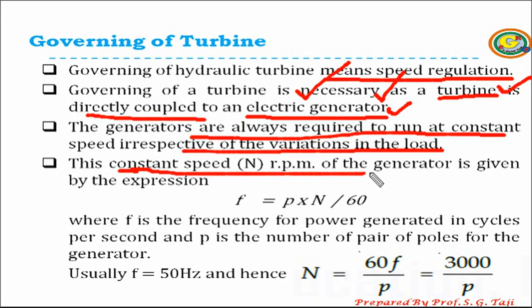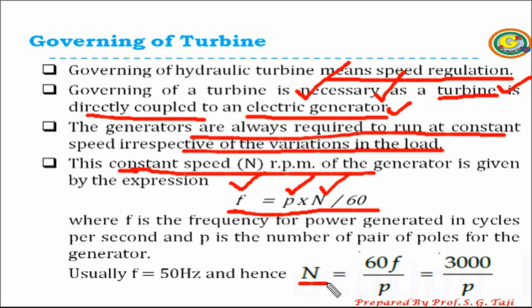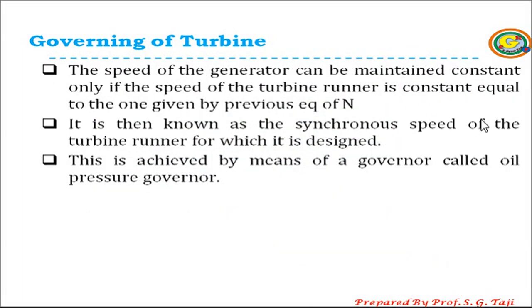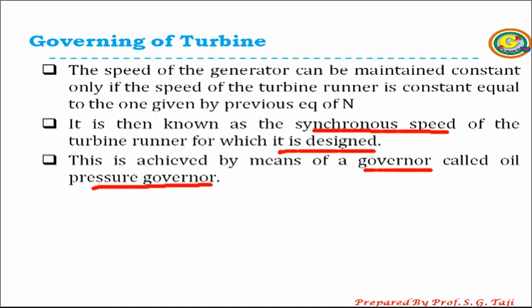The constant speed of the turbine is calculated using the equation: f = p × n / 60, where f is the frequency in hertz, p is the number of pairs of poles for the generator, and n is the speed of the generator. Generally this value of f is 50 Hz, so by putting f = 50 Hz we get n = 3000 / p. Using this equation we can calculate the synchronous speed of the turbine for which it needs to be run, and we maintain that synchronous speed using a governor. In modern turbines we generally use an oil pressure governor.